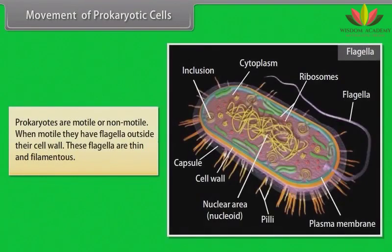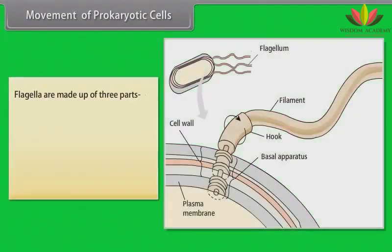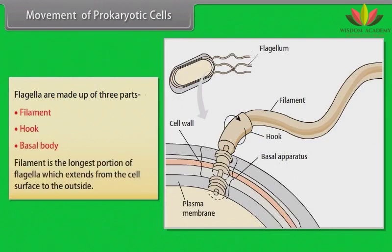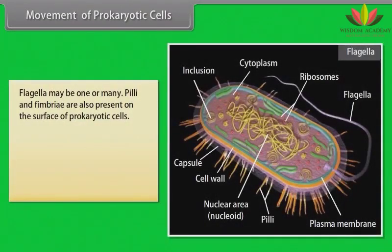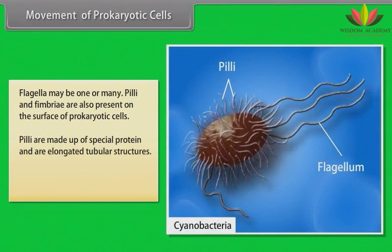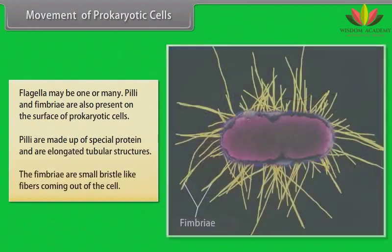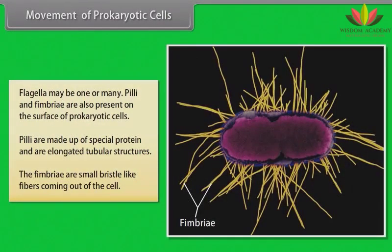Prokaryotes are motile or non-motile. When motile, they have flagella outside their cell wall, which are thin and filamentous. Flagella are made up of three parts: filament, hook, and basal body. The filament is the longest portion, extending from the cell surface to the outside. Flagella may be one or many. Pili and fimbriae are also present on the surface of prokaryotic cells. Pili are made up of special protein and are elongated tubular structures, while fimbriae are small bristle-like fibers coming out of the cell.